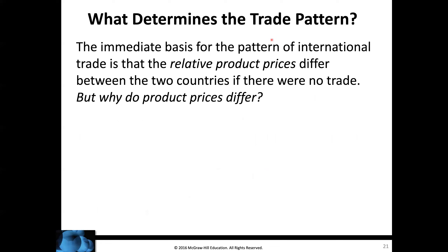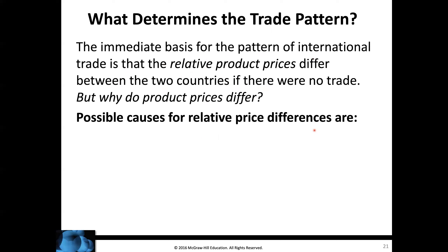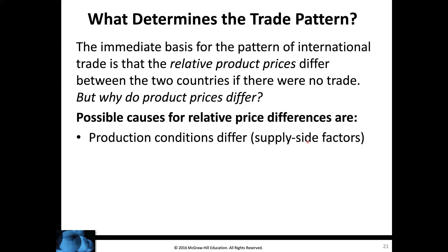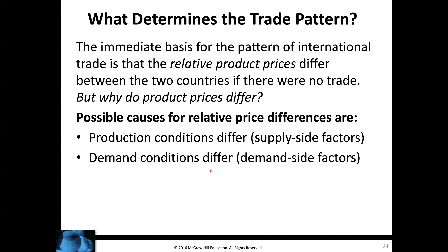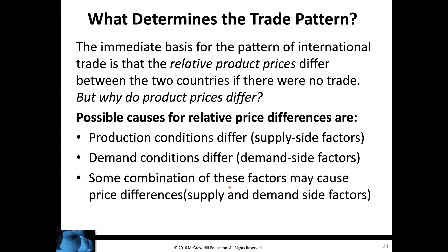What determines the trade pattern? The immediate basis for international trade is that relative product prices differ between countries — two wheat per cloth in the U.S. versus 0.67 units of wheat per cloth in the rest of the world. But why do product prices differ? Possible causes include differing production conditions on the supply side — for example, U.S. land may be better suited for producing wheat — as well as differing demand conditions. Some combination of these supply and demand side factors may cause price differences.